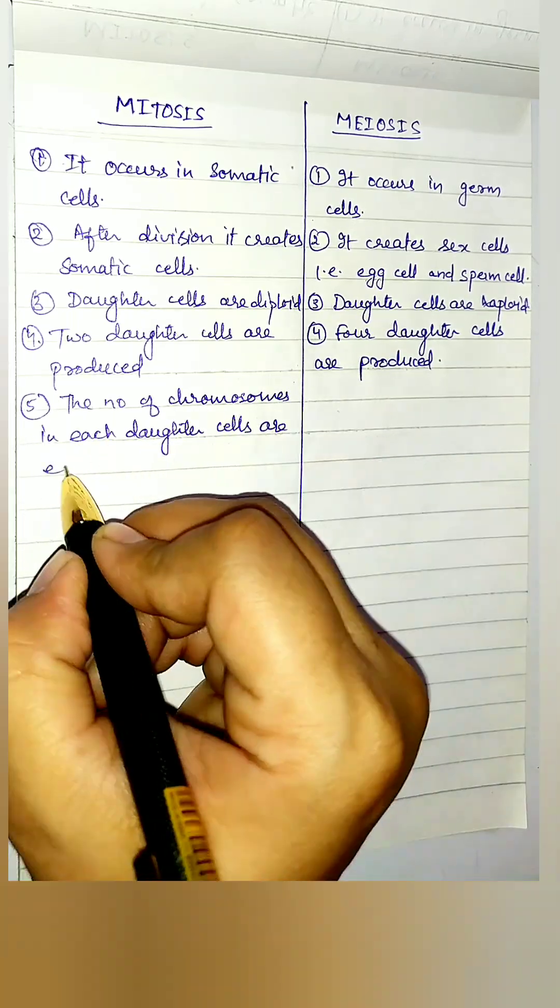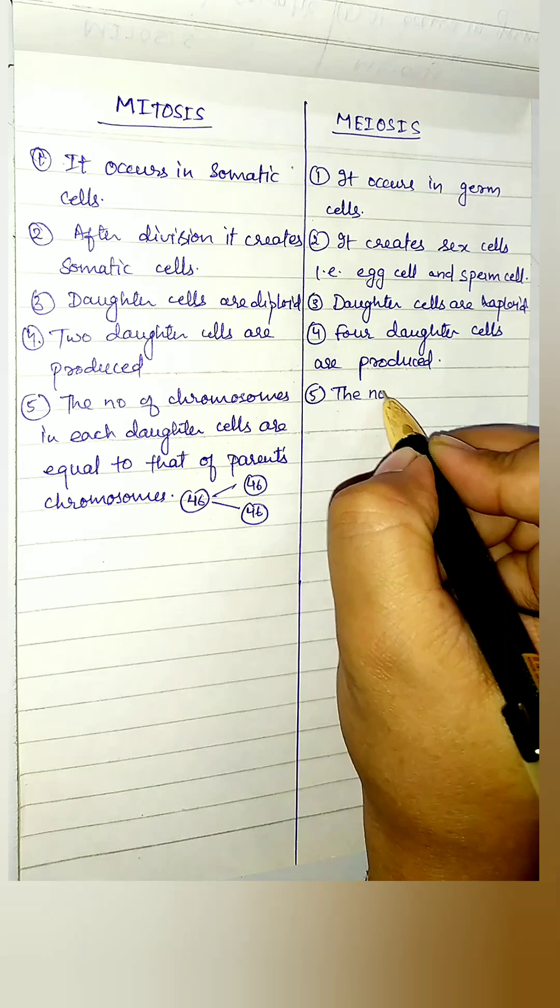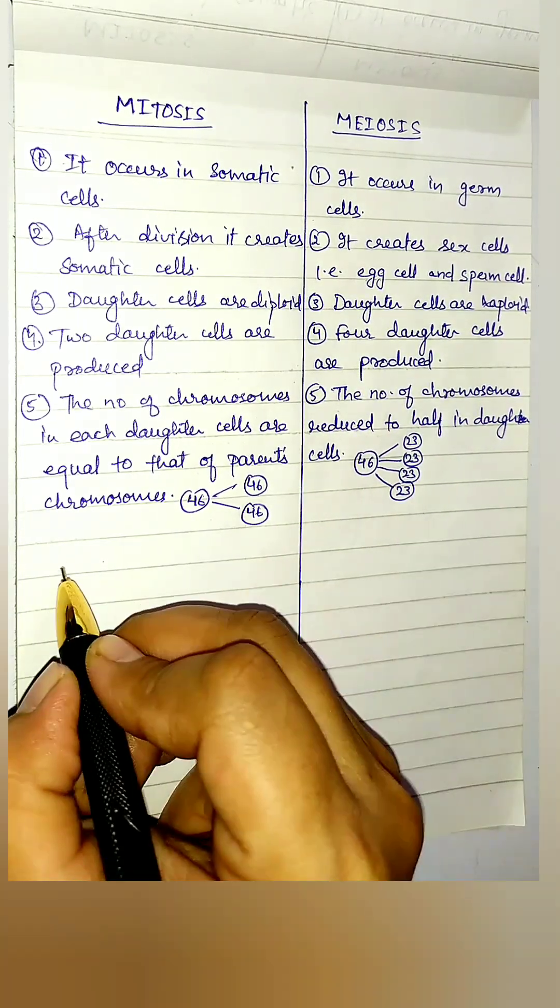The number of chromosomes in each daughter cell are equal to that of parent's chromosomes, that is 46 in each. The number of chromosomes is reduced to half in meiosis, that is 23 chromosomes in each daughter cell.